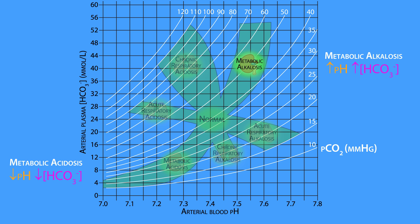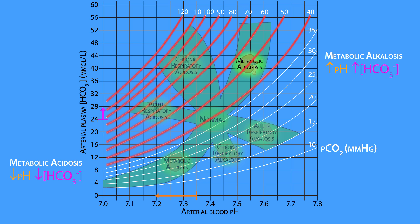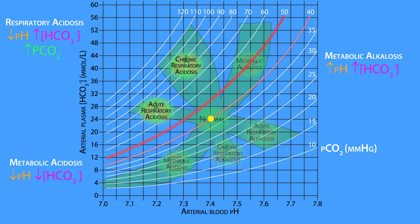If the pH is less than 7.35, but the PCO2 is greater than 40 millimeters of mercury and the bicarbonate is greater than 24 millimoles per liter, this is referred to as acute or chronic respiratory acidosis, which is usually due to an increase in arterial PCO2. For example, if the PCO2 is increased from 40 to 50 millimeters of mercury while the bicarbonate is kept at 24 millimoles per liter, it results in a decrease in pH from 7.4 to 7.3.